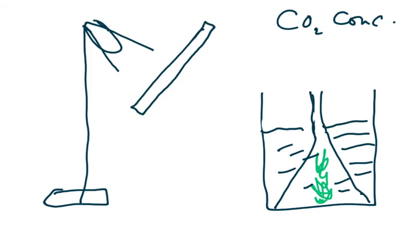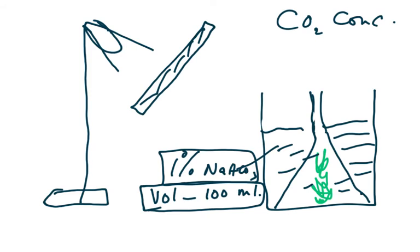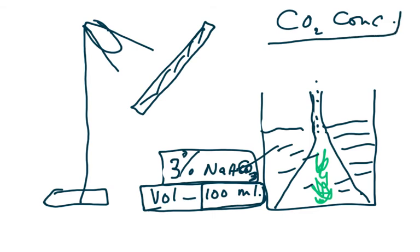Keep the heat shield in place — do not remove it. The volume of sodium hydrogen carbonate solution must remain constant; for example, if you used 100 ml, keep it at 100 ml. Then change the concentration to 2%, then 3%, measuring bubbles per unit time or volume of gas produced each time. You are changing only the concentration of sodium hydrogen carbonate.